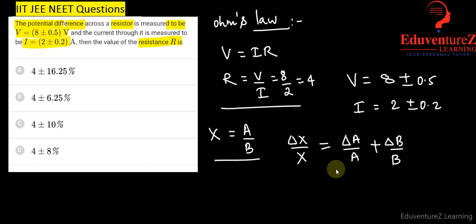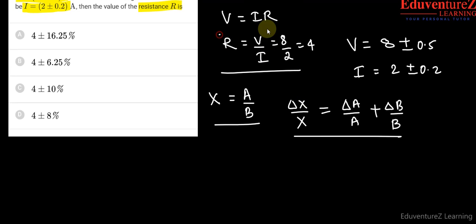So we will apply the same method here. So here R is equals to V upon I, so delta R upon R...